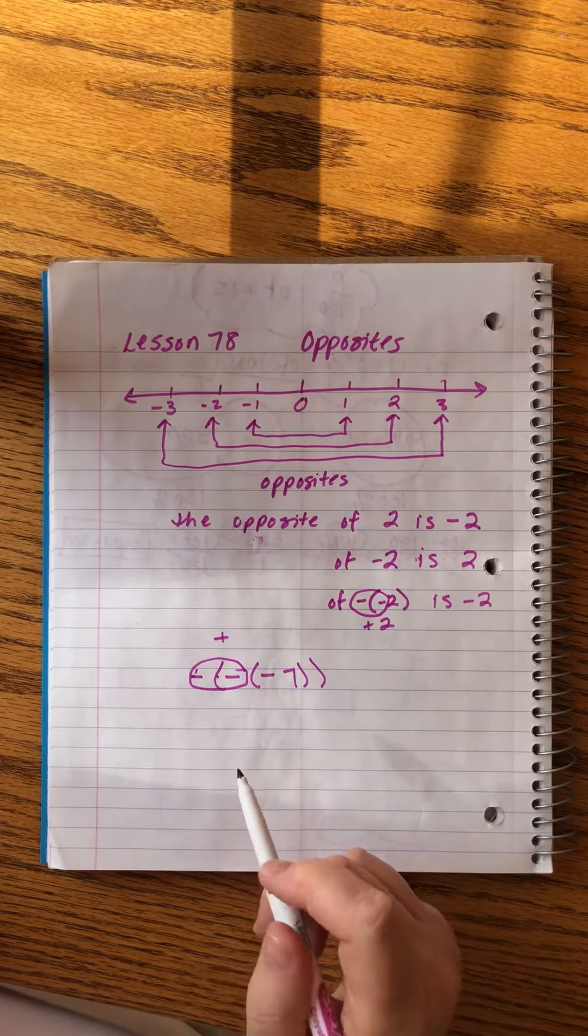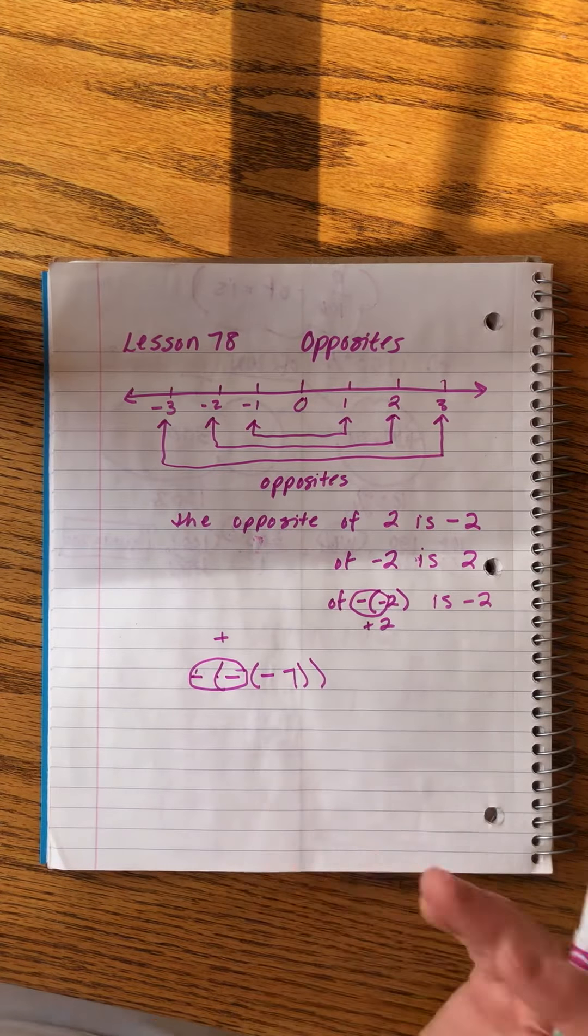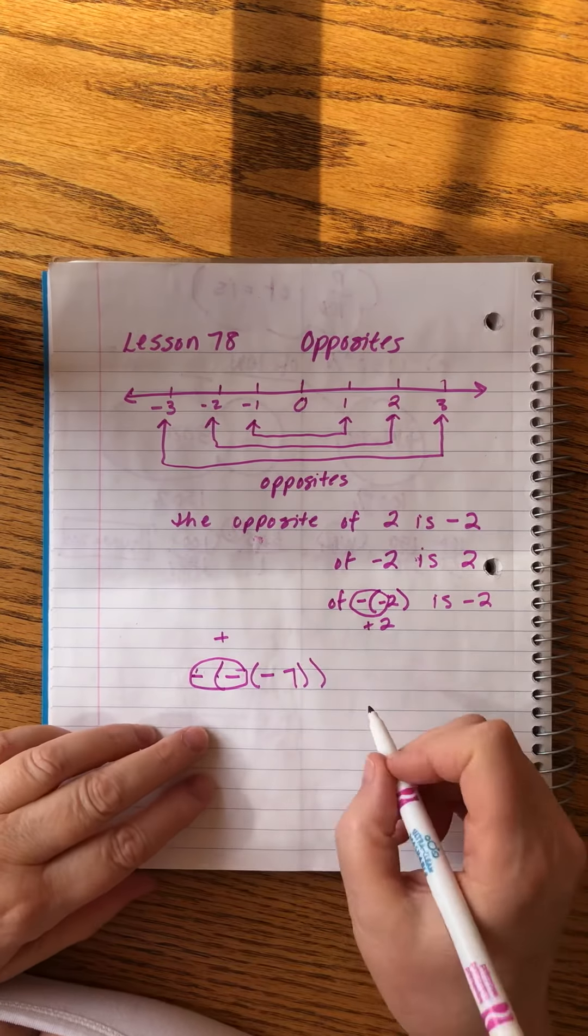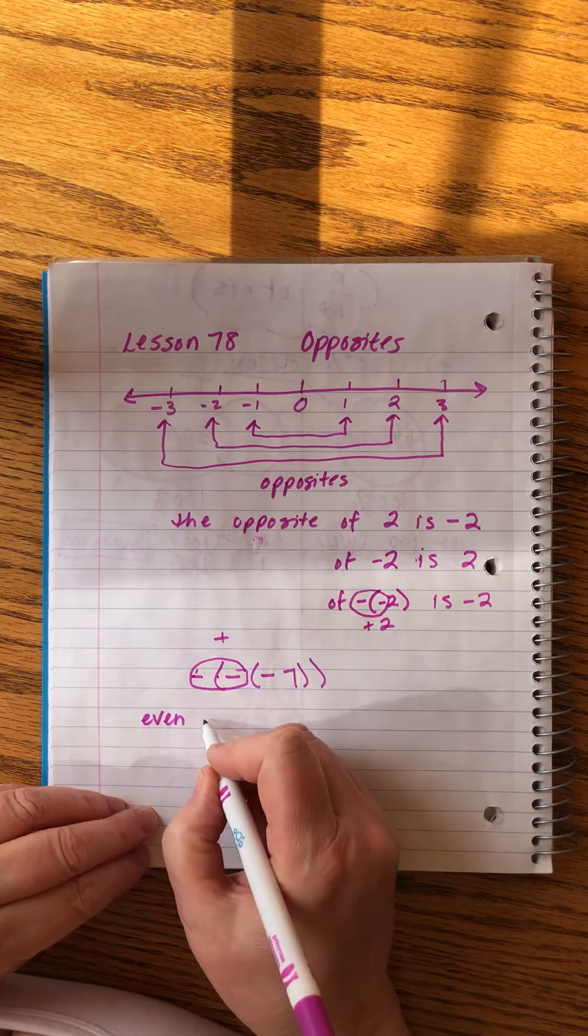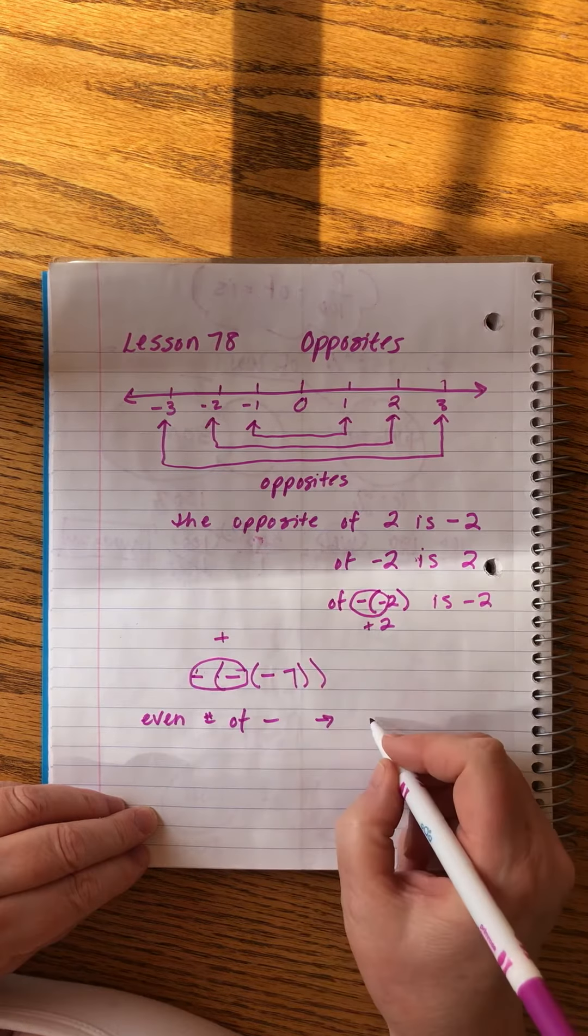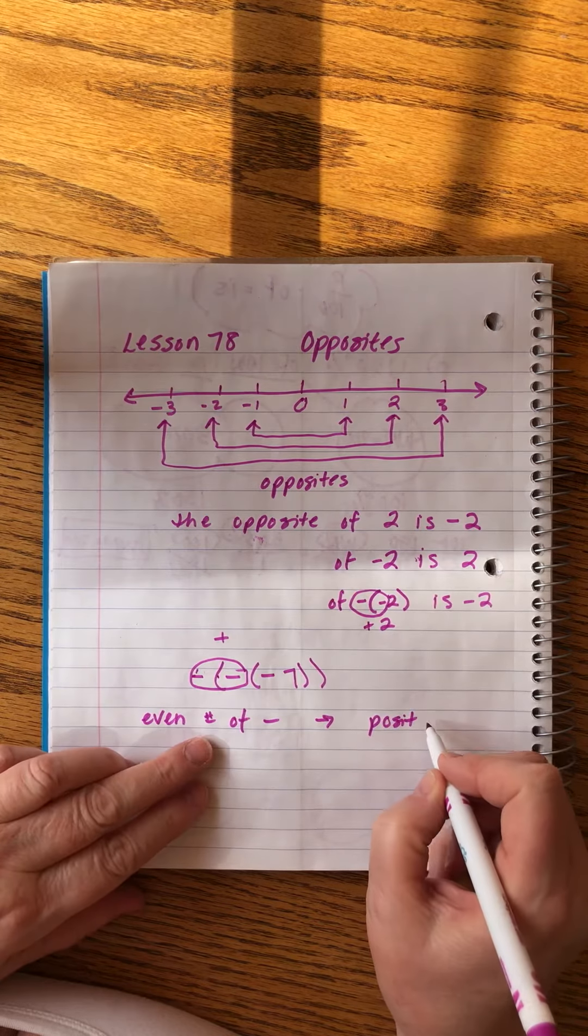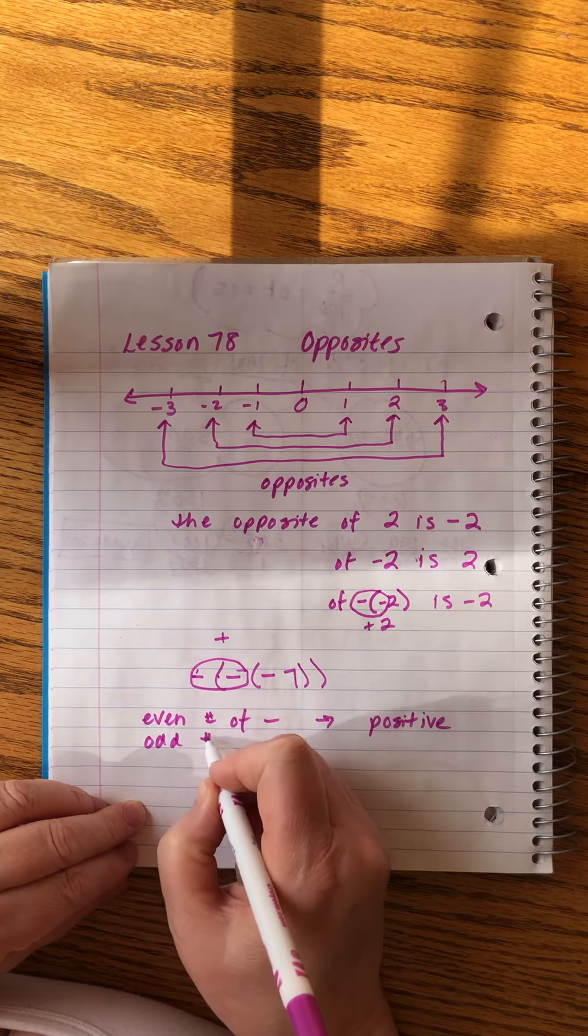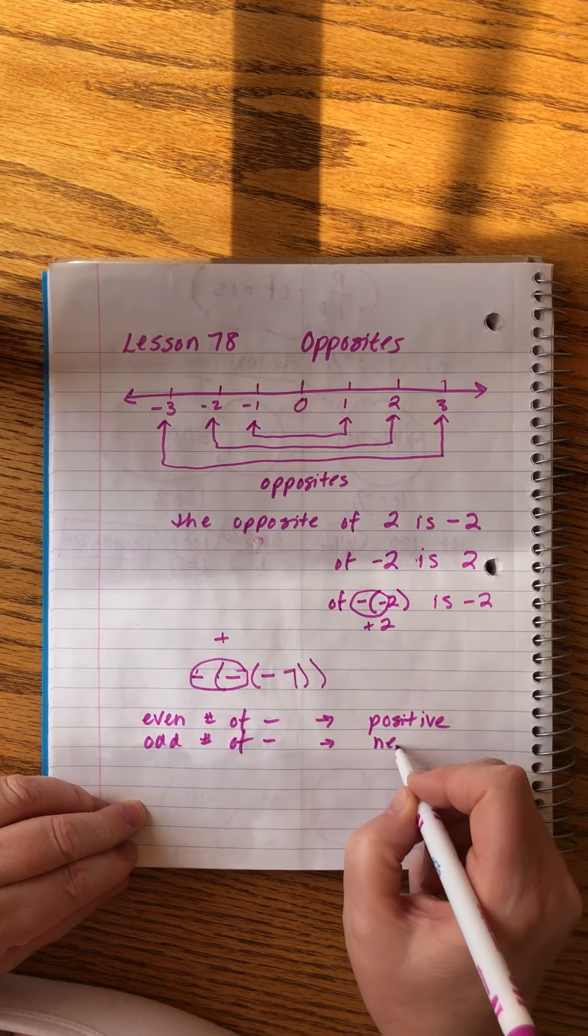Every two negatives make a positive. So when you have these long strings of numbers, you can just pair them off and see what you're left with in the end. What some people do is they just count them up. If you have an even number of minus signs, that means you have a positive number, because every single negative has a pair, a partner. And if you have an odd number of negative signs, then you're going to end up with a negative number.